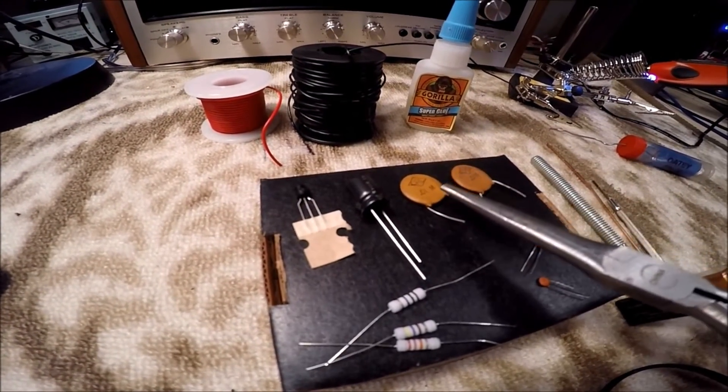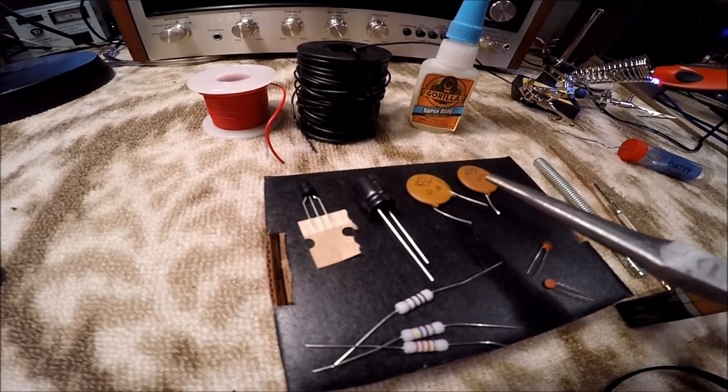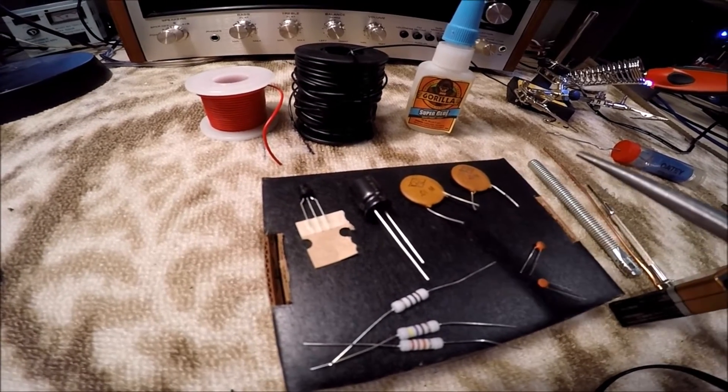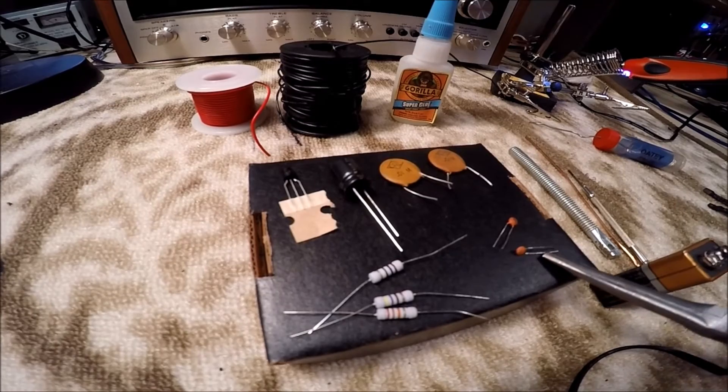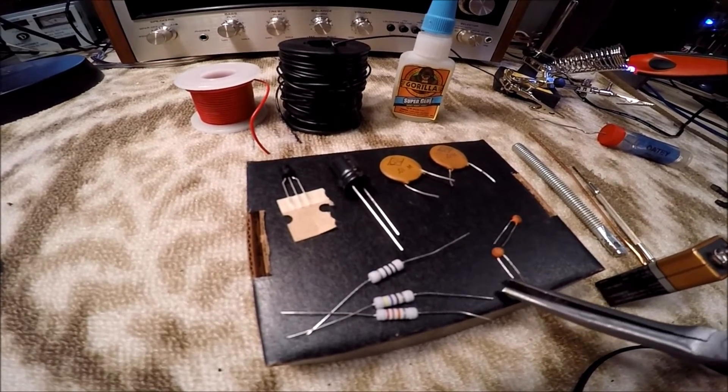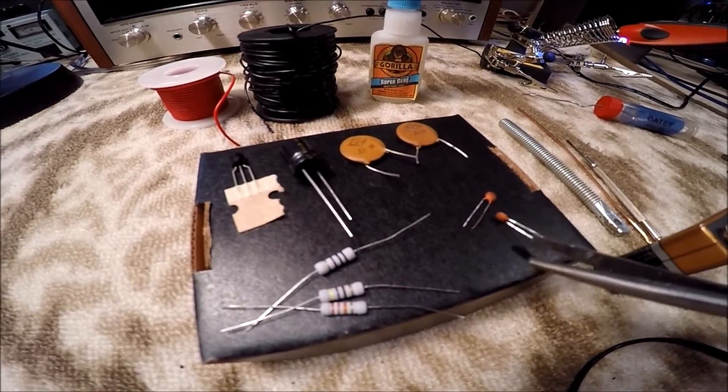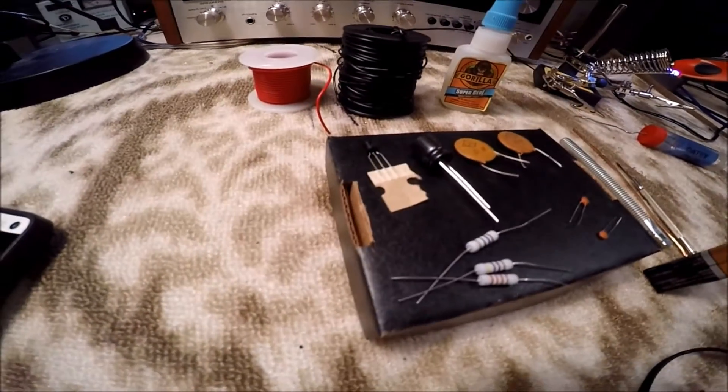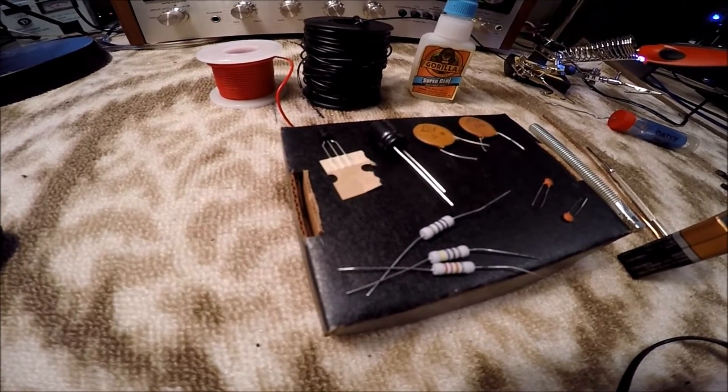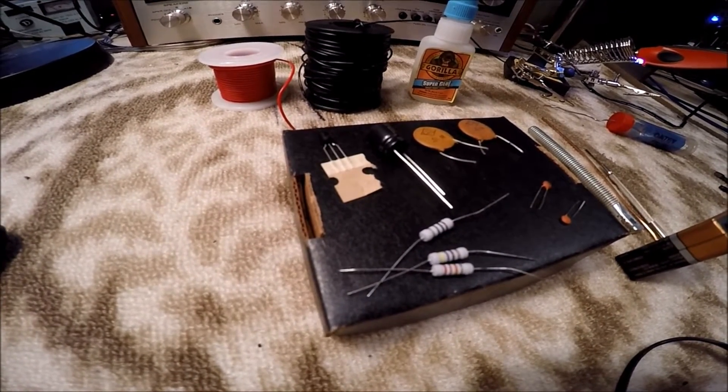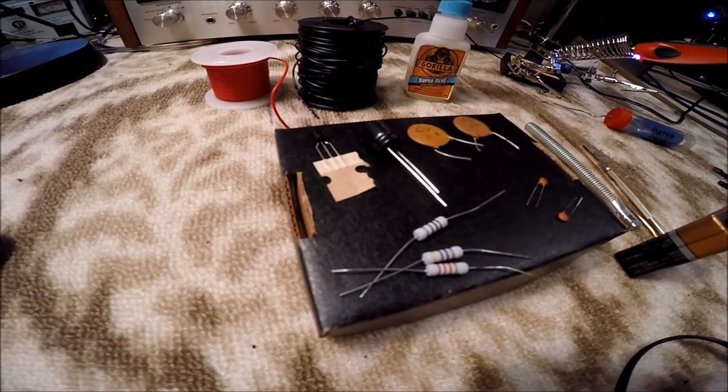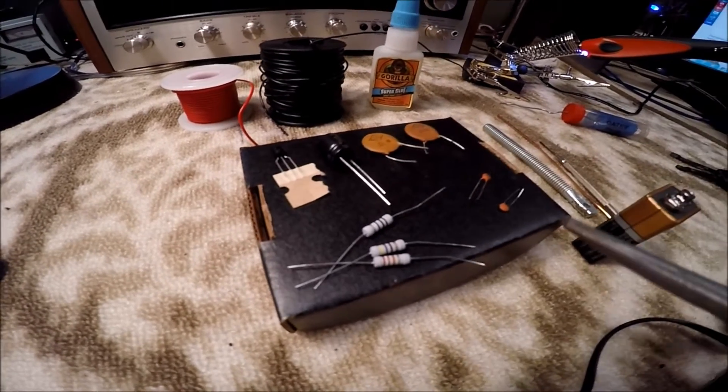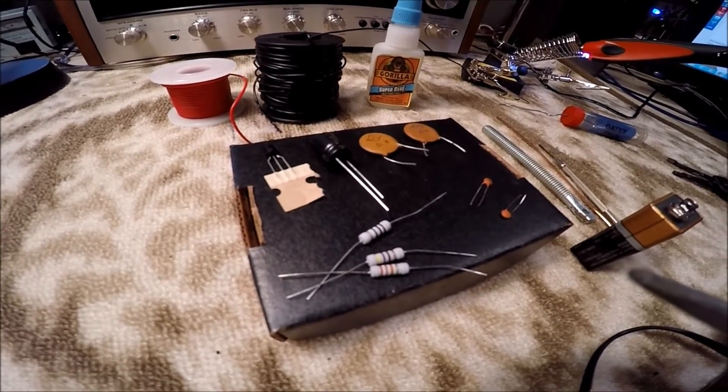Two 0.01 microfarad ceramic capacitors here, 0.01, and you're going to need two 10 picofarad capacitors down here. And three resistors. We have a 10K resistor, 10,000 ohm. We have a 470 ohm, and we have a 27,000 ohm. So we're close to it. I think I have a 22,000 ohm in there.